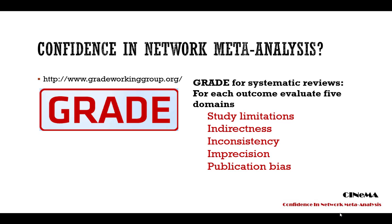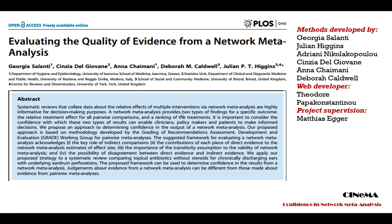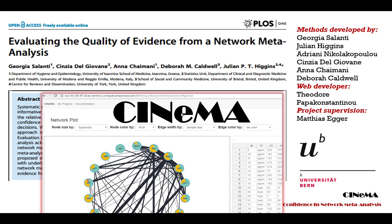We expand on the GRADE system and adapt the five domains — study limitations, indirectness, inconsistency, imprecision, and publication bias — in the context of network meta-analysis. The methods are described in a paper published in 2014, and a web application named Cinema is being developed to facilitate judgment and improve transparency.